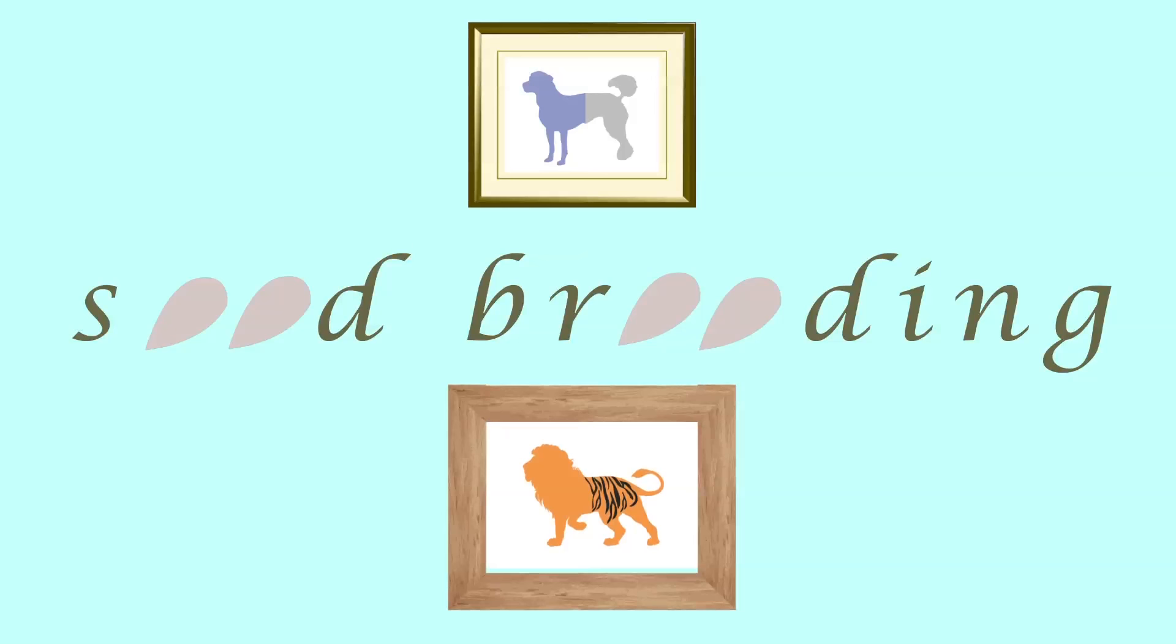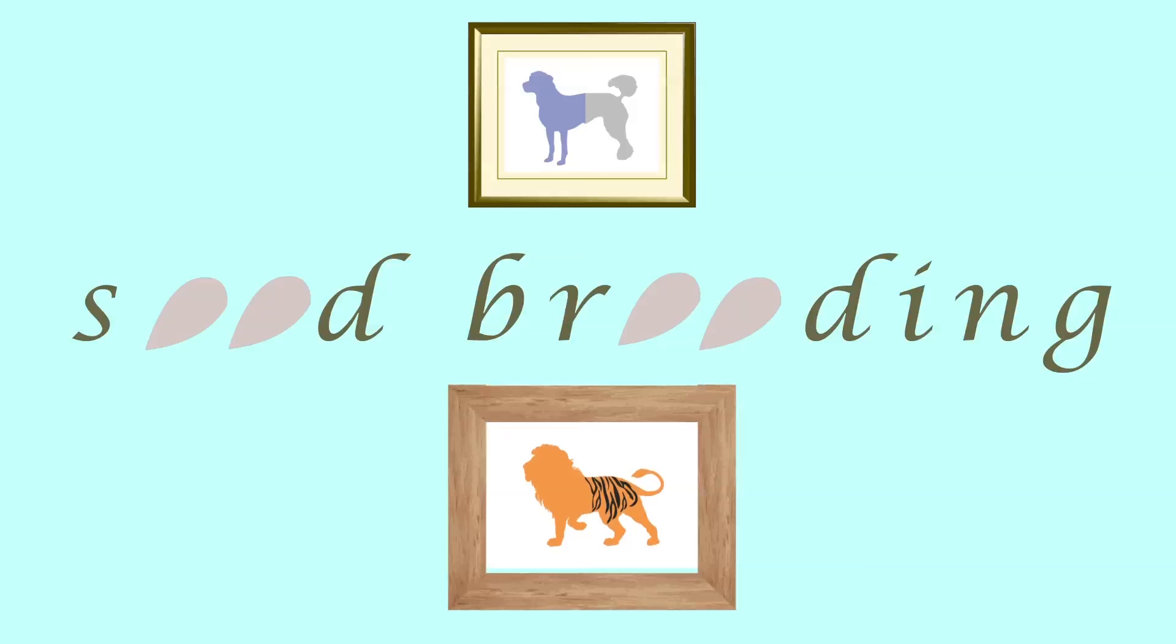It's kind of like how we got the labradoodle or liger. You cross two breeds to make a new one with the best traits of each. But how does it work?